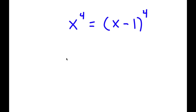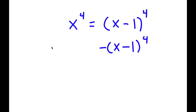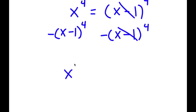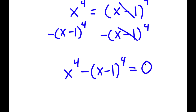In this problem, I have x to the power of 4 is equal to x minus 1 to the power of 4. To solve this, I'll first subtract x minus 1 to the power of 4 from both sides. These cancel out, and now I have x to the power of 4 minus x minus 1 to the power of 4 is equal to 0.